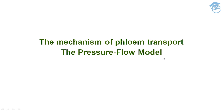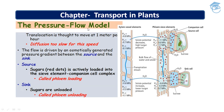I have already taught you about the source and sink in my previous section, so you can refer to that for better understanding. Here, we will be focusing on the mechanism of phloem transport, the pressure flow model. As we know, source is the leaf, and sink can be any storage organ like seeds or root. This is our source cell, which is a leaf, and these are the sieve tube elements of the phloem.